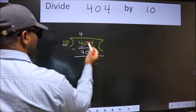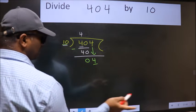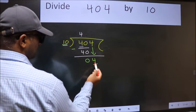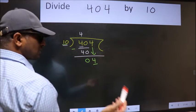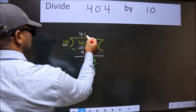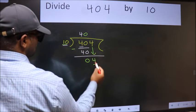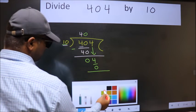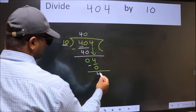If I take 1, we will get 10. But 10 is larger than 4. So what we do is, we take 0. So 10 into 0, 0. Now we subtract. We get 4.